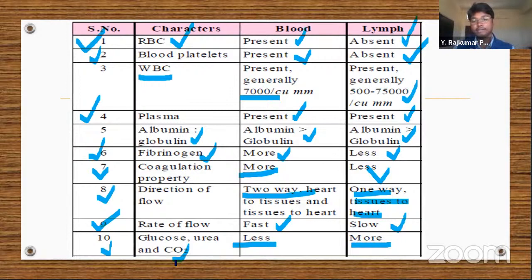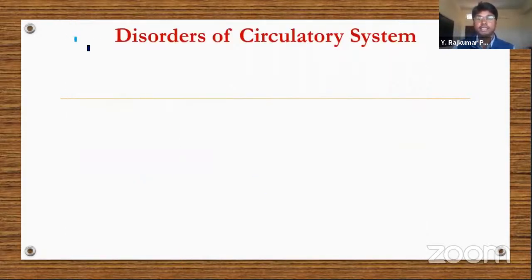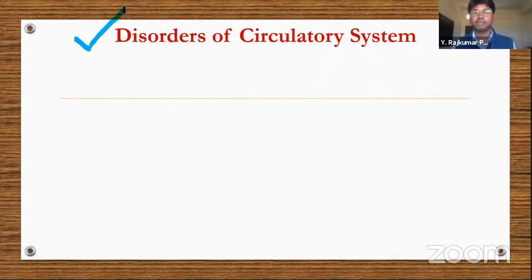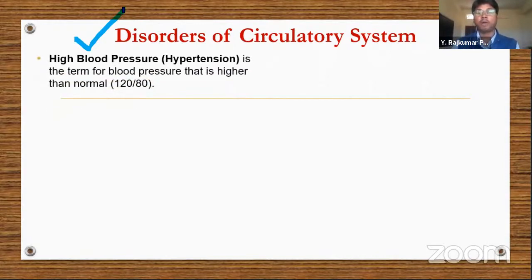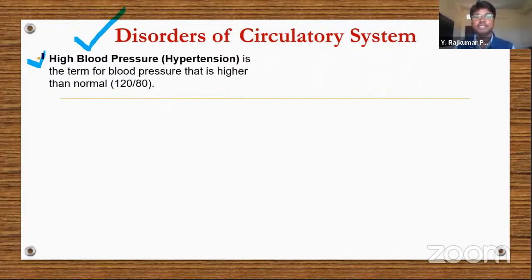Now let's study the disorders of the circulatory system. Some diseases are genetic and some are non-genetic. First is blood pressure (BP). Whenever we visit a hospital they first check our BP. Normal blood pressure is 120/80 mmHg; if it is more or less, both conditions lead to disorder.